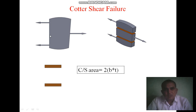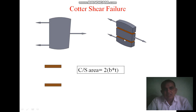Due to these force conditions, the cotter fails at two different cross-sections based on the load application conditions. This area is where the cotter fails, and these are the cross-sectional areas for shear failure, which you can find out using the equations.